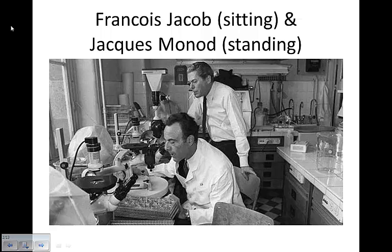Let's first start with the discoverers of the control mechanisms. Back in 1961, Francois Jacob and Jacques Monod discovered this control mechanism. Jacob looks like he's got his tongue hanging out of his mouth, and Monod has a cigarette hanging out of his — those were the days when they smoked in the labs.